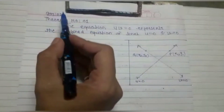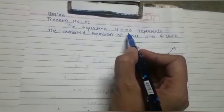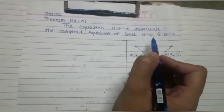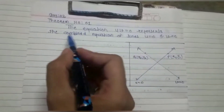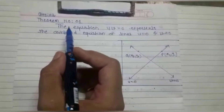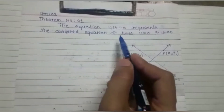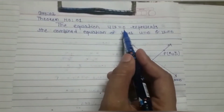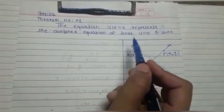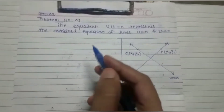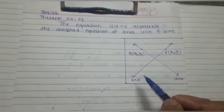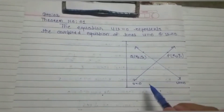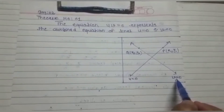We have considered the equation uv = 0 as the combined equation of two lines u = 0 and v = 0. Now we will see how to prove that uv = 0 really represents the combined equation of u = 0 and v = 0. In this theorem, what we are trying to prove is: if u = 0 and v = 0 are the two lines...